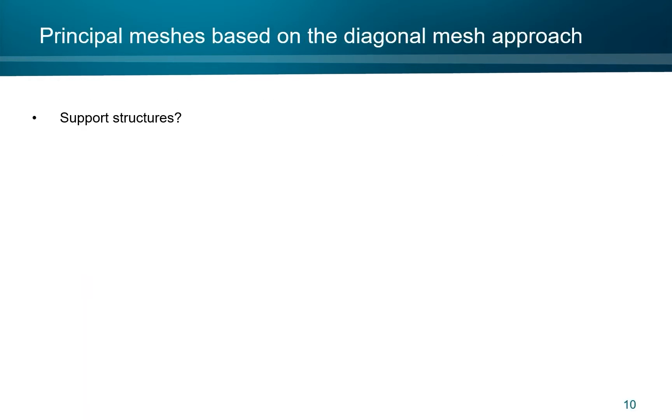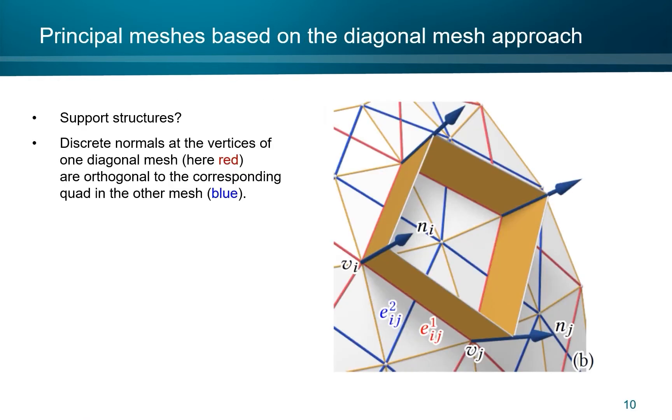What about support structures? For that, we define discrete normals at the vertices of a diagonal mesh, here the red one, as being orthogonal to the corresponding quad in the other mesh, here the blue one. The neighboring discrete normals are coplanar. This is easy to see, and it is useful for support structures in architectural applications.